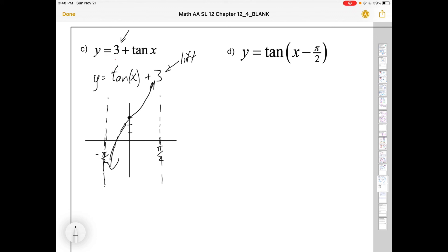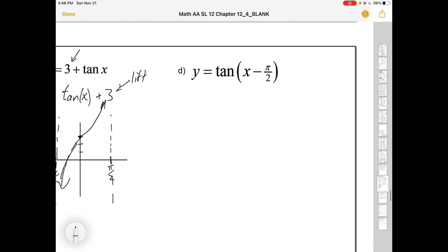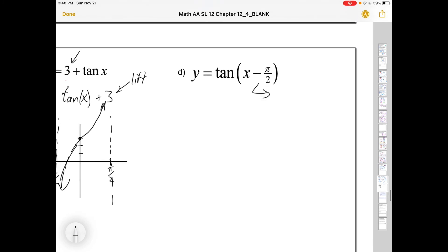Lastly, we've got tan of x minus π over 2, so this is moving π over 2 to the right. That's the only change that's being made compared to the basic one. So let me just draw yet again what the basic one is that I'm holding in my mind. π over 2, negative π over 2, that's the basic one.